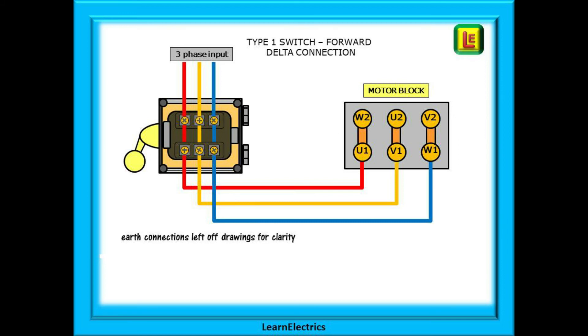In the forward position we have the same supplies to the motor. L1 to U1, L2 to V1, and L3 to W1. And in reverse L1 to U1 again, L2 crosses over to W1, and L3 crosses over to V1. Just to reiterate, make no changes at the motor block. Leave everything as it was. The switch does all the hard work for you.